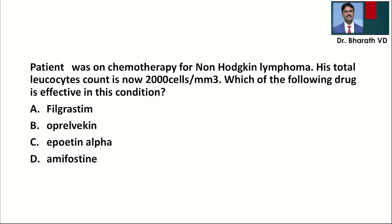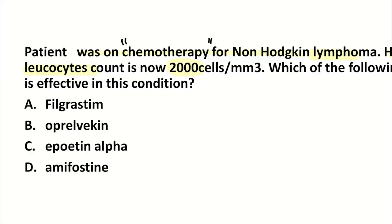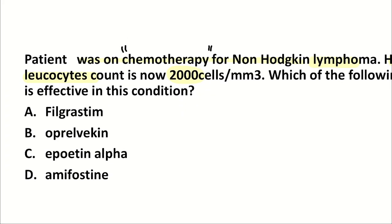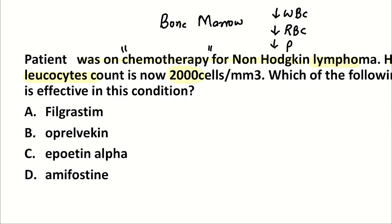Moving on to the next question: a patient was on chemotherapy for non-Hodgkin's lymphoma and his total leukocyte count is now 2,000 — the normal range is 3,000 to 11,000. Which of the following drug is effective in this condition? When we use chemotherapy, it suppresses the bone marrow. So there will be bone marrow suppression leading to decrease in WBC, decrease in RBC, and decrease in platelets — causing infections, anemia, and thrombocytopenia with bleeding episodes.